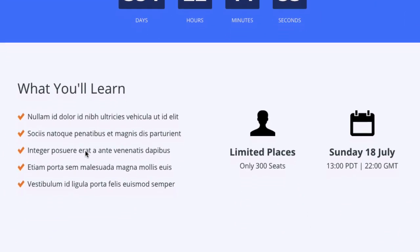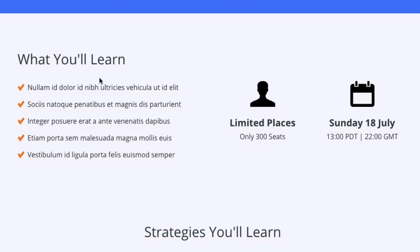We then drop down into a "What You'll Learn" section. You can use this to bullet out points you're going to cover on the webinar, what you're going to teach them. You might also want to put another reminder of the date or when it's happening. There's also a "limited places — only 300 seats" note. It's worth adding that if you do have a limited number of seats, use it ethically and tell people there is a limited number of spaces.